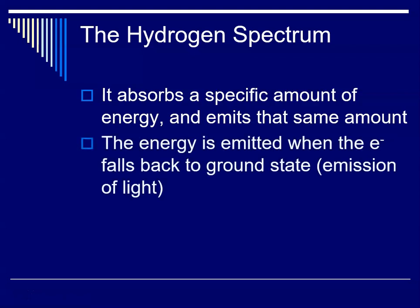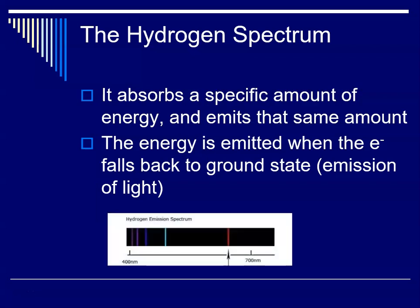So the energy is emitted when the electron falls back to its ground state, and that is if it's in the visible region that is accompanied by an emission of light. So again, this is what the hydrogen emission spectrum looks like.